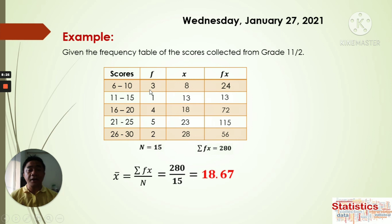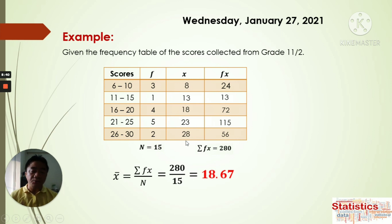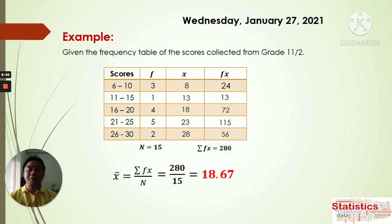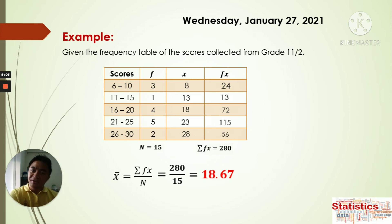For the midpoint of 8, there are 3 respondents. For 13, there is only 1 respondent. For 18, there are 4 respondents. For 23, there are 5 respondents. For 28, there are 2 respondents. And for all this data, the average is 18.67. This is similar to what we have in combined arithmetic mean, because we use the number of respondents and the average — but it's not exactly the same since the midpoint values here are not average means themselves.